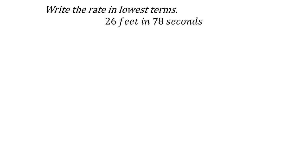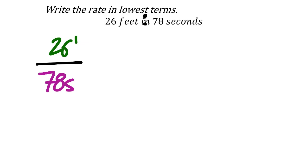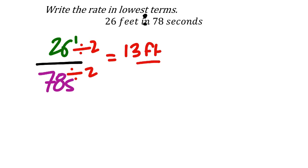Write this rate in lowest terms: 26 feet in 78 seconds. As a fraction that's 26 feet over 78 seconds. Both are divisible by 2, so we simplify: 26 divided by 2 is 13. Labels don't cancel here, so we keep them: 13 feet over 39 seconds.